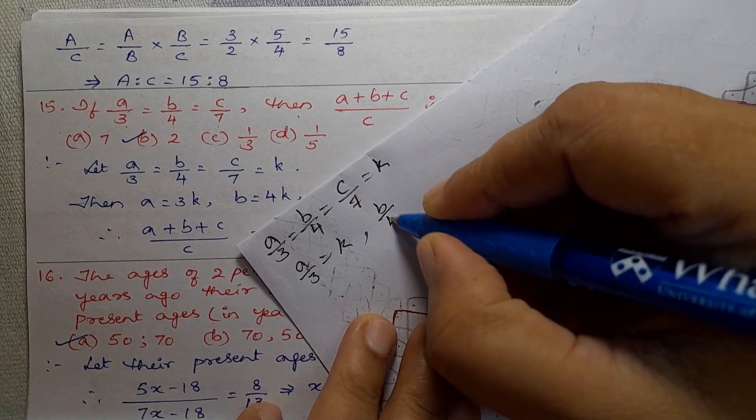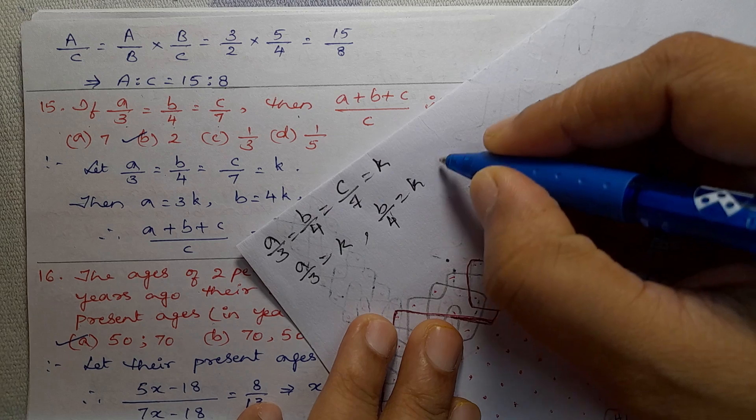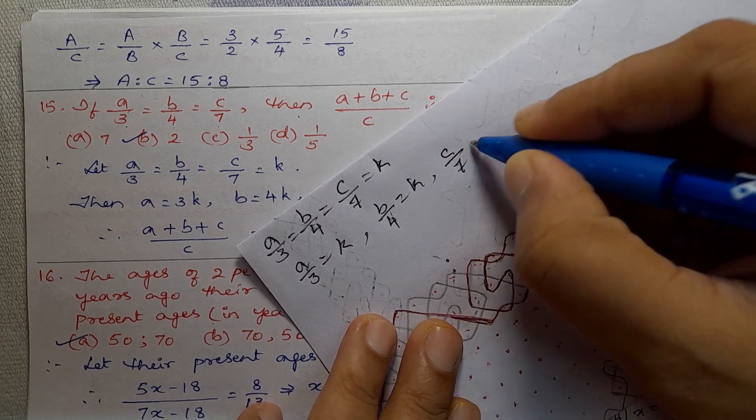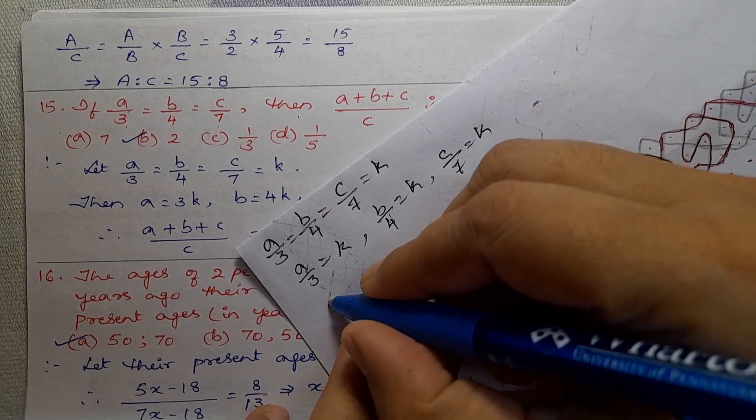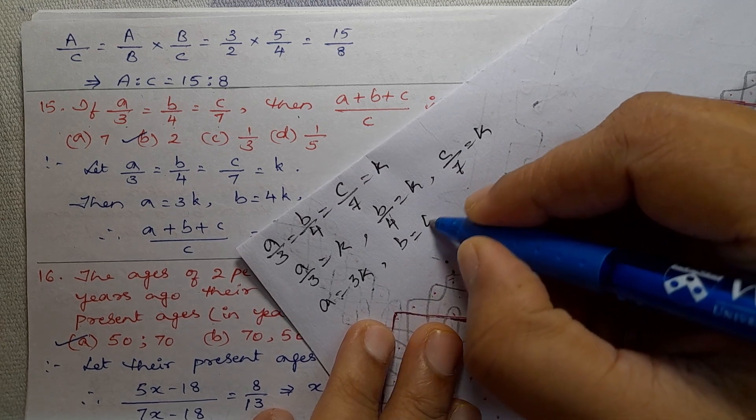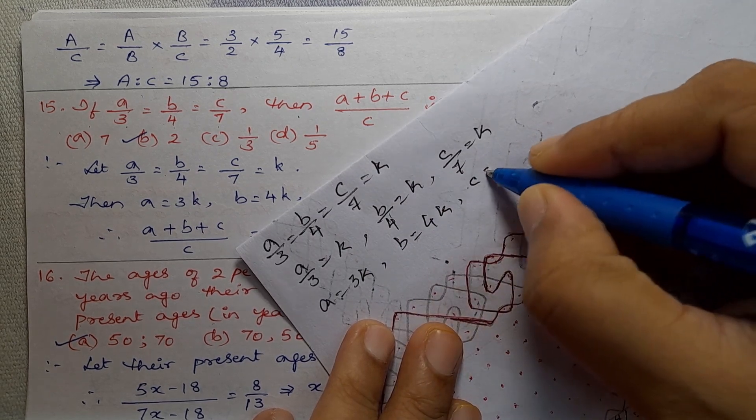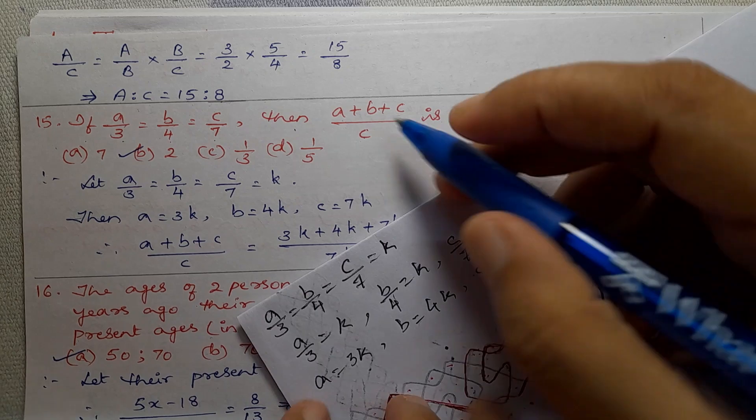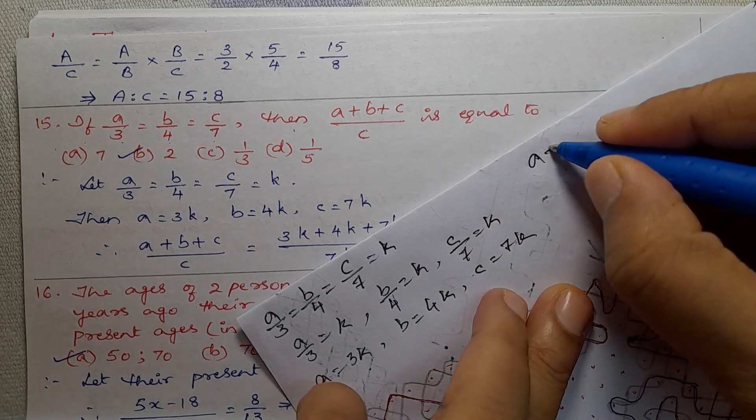Then C by 7 equal to K. So then A equal to 3K, B equal to 4K, and C equal to 7K. Equations: A plus B plus C divided by C.